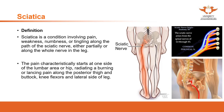Sciatica is also very common in practice. One of the most typical symptoms is that, although the nerve originates from the lower back, the patient sometimes has no sensation in the lower back at all. The more common manifestation is pain along the leg — either at the back of the thigh, the side, the calf, or even all the way to the foot. If you see a patient presenting with pain all along the leg, you can diagnose it as sciatica.